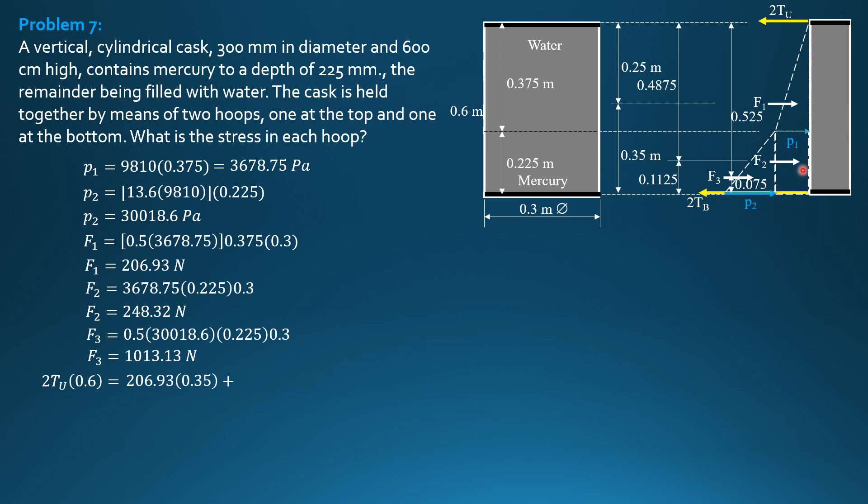Plus F2. F2 is 248.32 times 0.1125. And plus F3, 1013.13 times 0.075. So from there, we can now compute that stress or tension in the upper hoop is equal to 147.0 newtons.